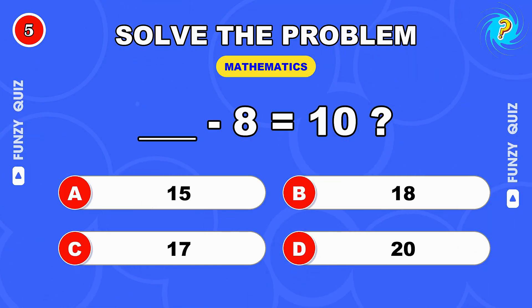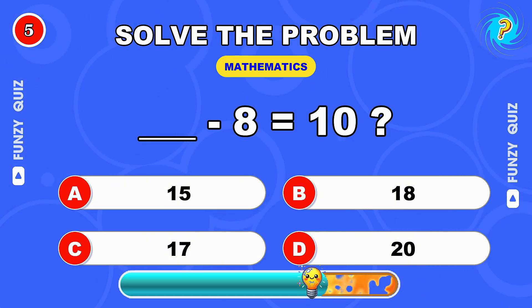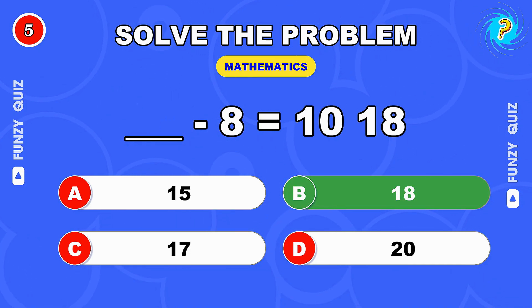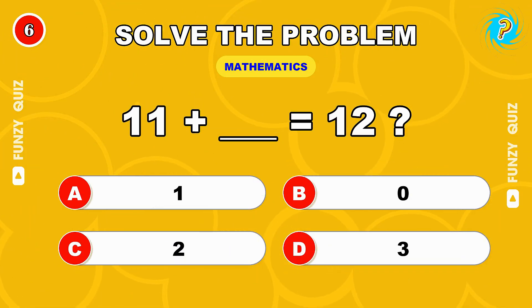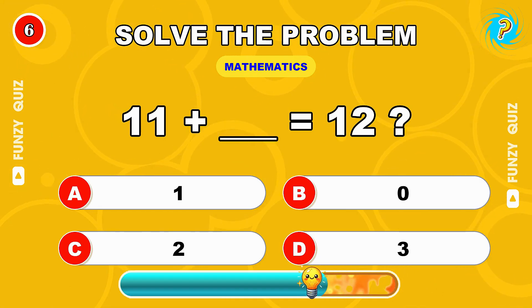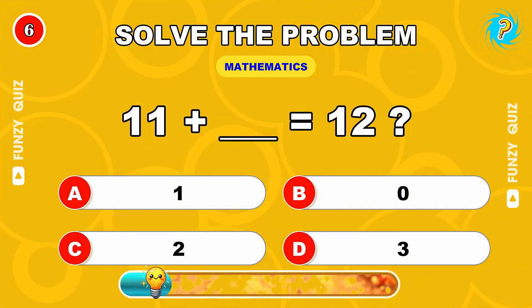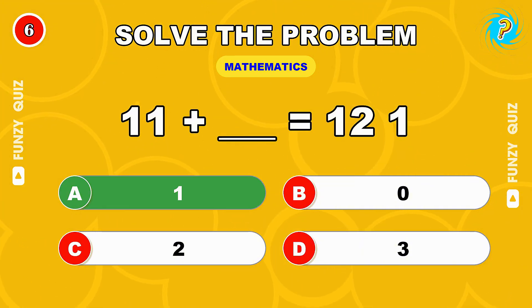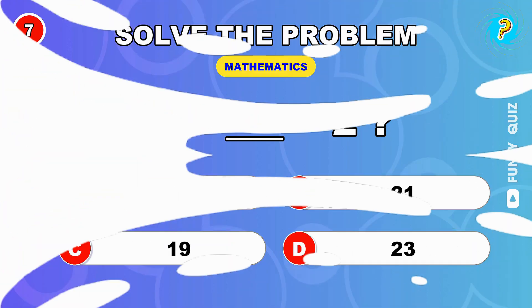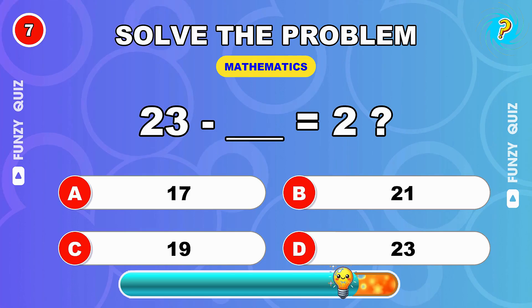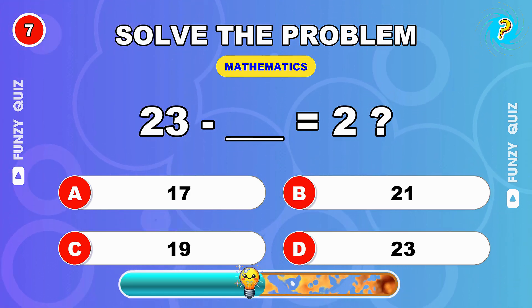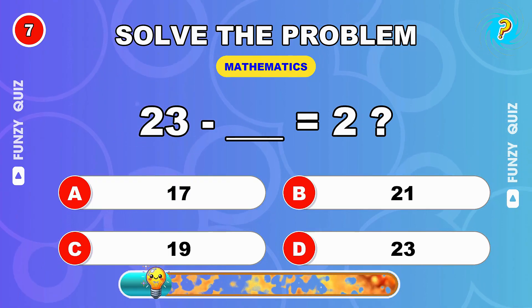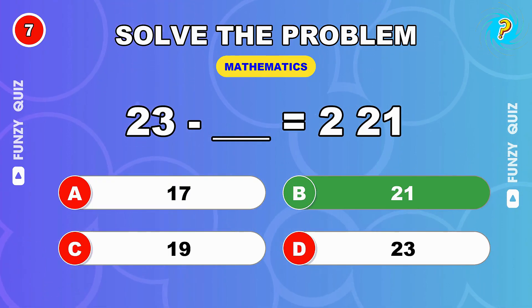Fill in the blank. What number minus 8 equals 10? 18, you got it. 11 plus what makes 12? 1, correct. 23 minus what equals 2? 21, perfect.